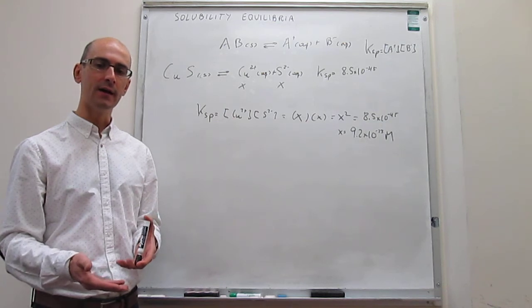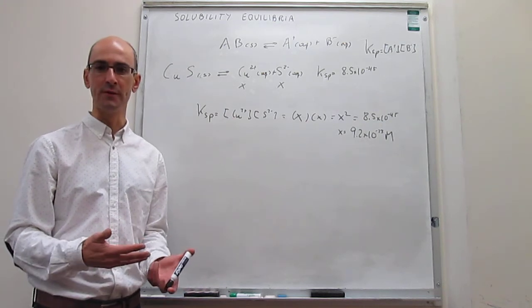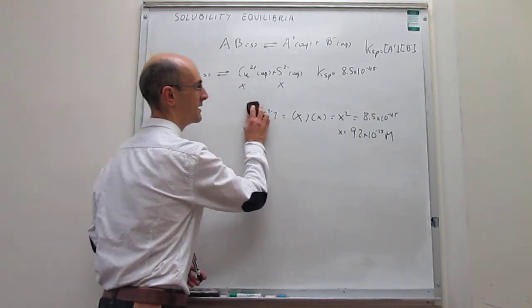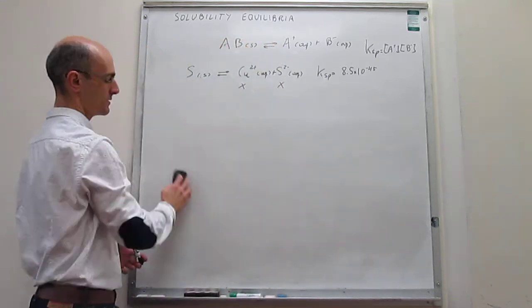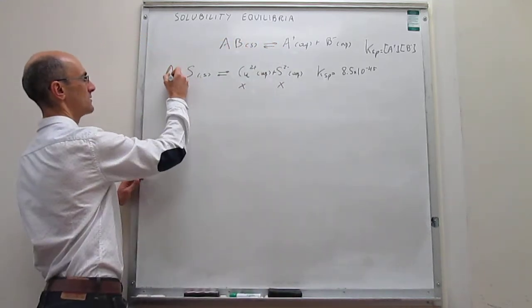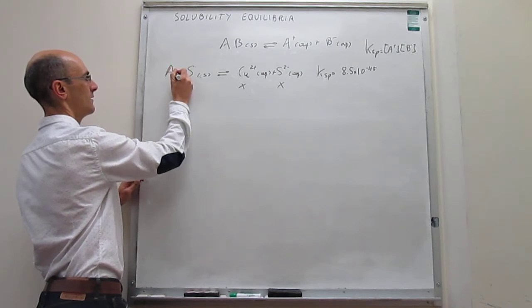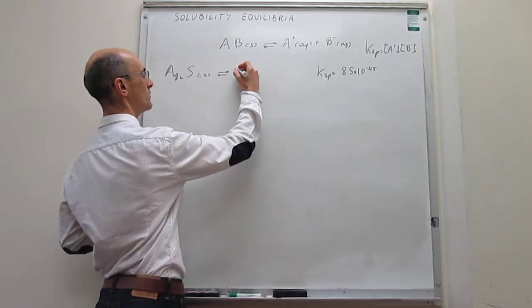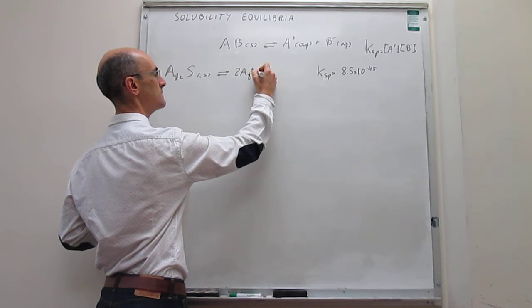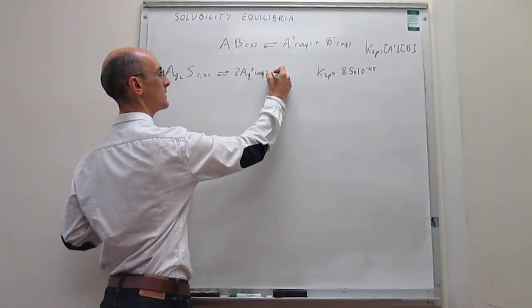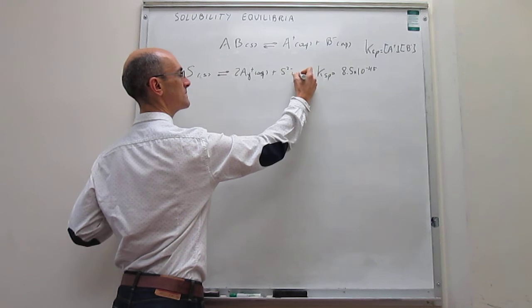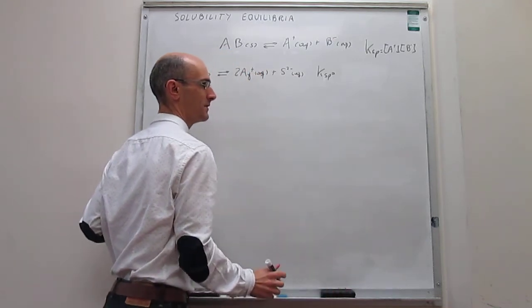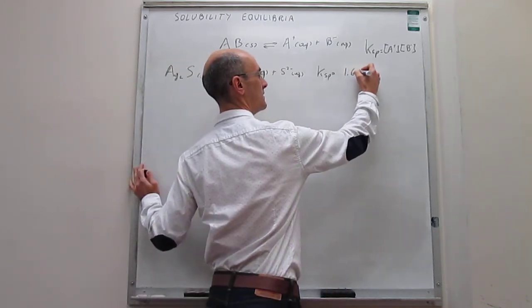There are cases that are a little more complicated. Let's move on to a different example in which the stoichiometry is not as trivial. Let's look at silver sulfide instead. Silver sulfide is this insoluble salt, and its equilibrium produces two silver ions plus sulfide. The solubility product for this case has the value of 1.6×10⁻⁴⁹.